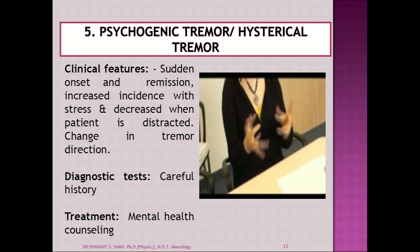The next type is psychogenic tremor. It has a sudden onset and remission. Incidence increases with stress and decreases when the patient is distracted. It changes in tremor characteristics continuously — you cannot assign one fixed pattern. Diagnosis requires very careful history-taking because the reason is psychological; it may be associated with stress. When the patient is out of the stress, the tremor reduces. Treatment requires counseling by a mental health counselor.